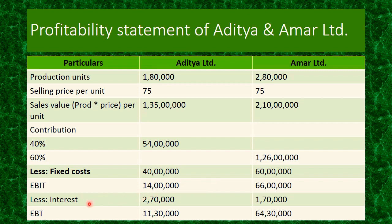Then we deduct interest from EBIT to get EBT — earnings before tax. Interest is calculated based on the cost of debt capital given in the question. It is 2 lakhs 70,000 for Aditya (15 lakhs at 18%) and 1 lakh 70,000 for Amar (10 lakhs at 17%). So 14 lakhs minus 2 lakhs 70,000 gives 11 lakhs 30,000, and 66 lakhs minus 1 lakh 70,000 gives 64 lakhs 30,000. That is your profitability statement for both companies.